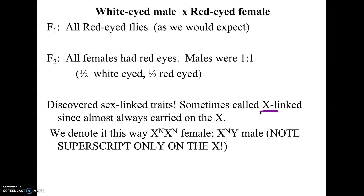He called this a sex-linked or X-linked trait. The Y chromosome has only about two dozen genes, so it's very rare for a trait to be Y-linked — these common ones are X-linked. The notation is X superscript for the trait: females are X^n X^n and males are X^n Y. The biggest mistake people make is putting a letter on the Y — the Y is a completely different chromosome and shares nothing with the X.